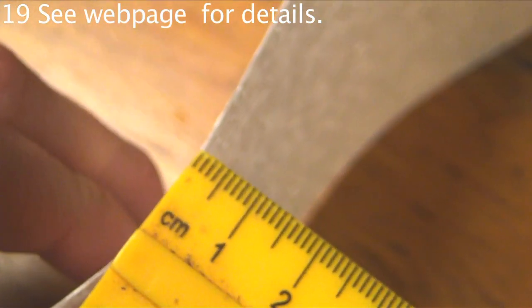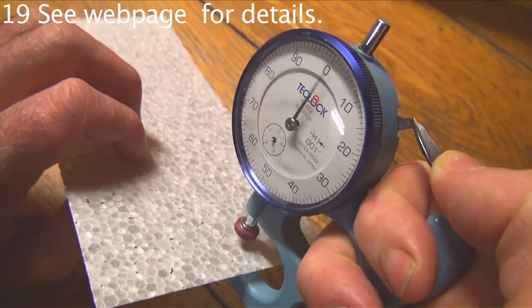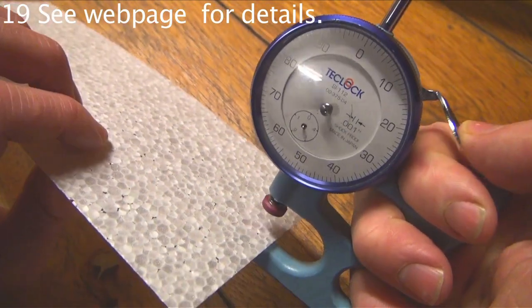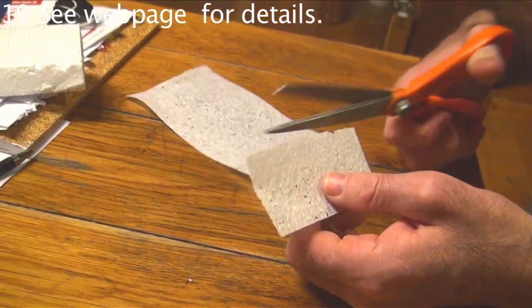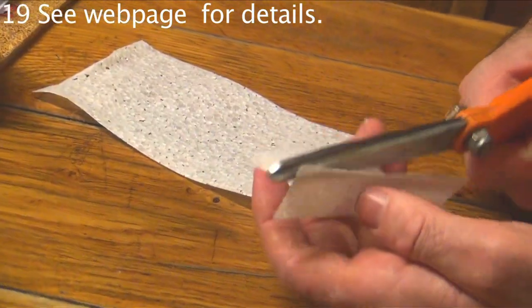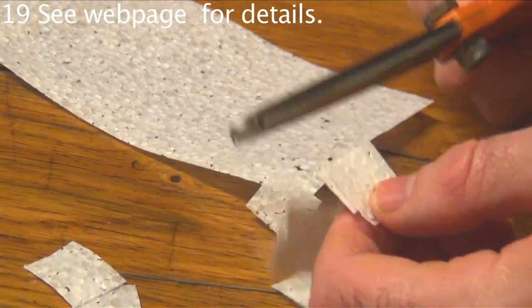You can't measure the thickness of a sheet with a ruler, and a dial gauge like this is expensive. You might not need to know the numeric measure, but if you want to know, cut 10 squares and stack them together.